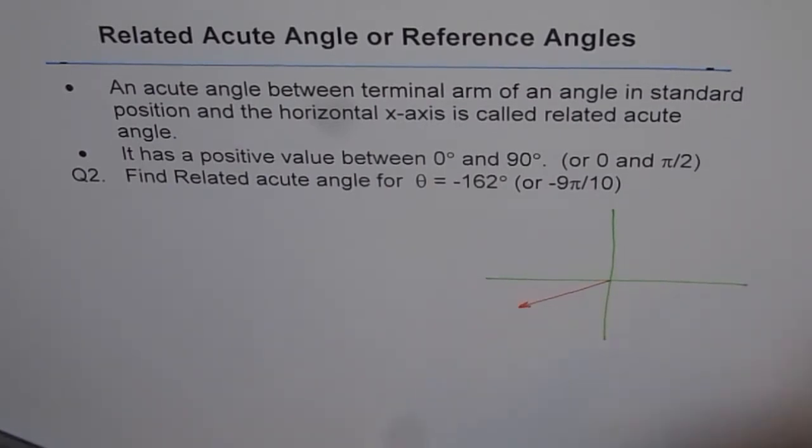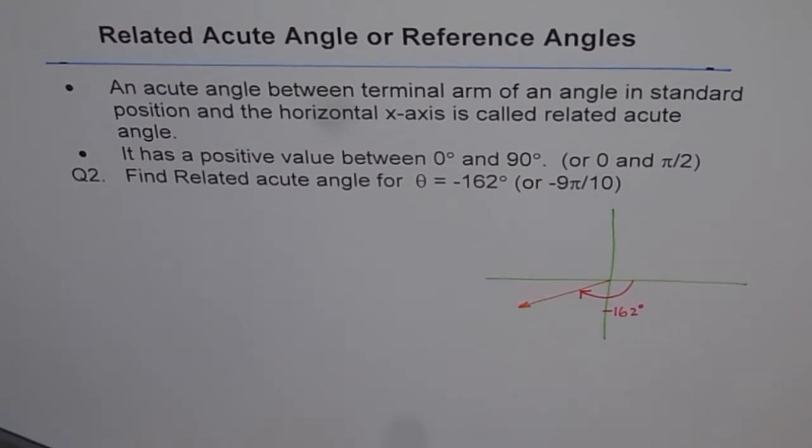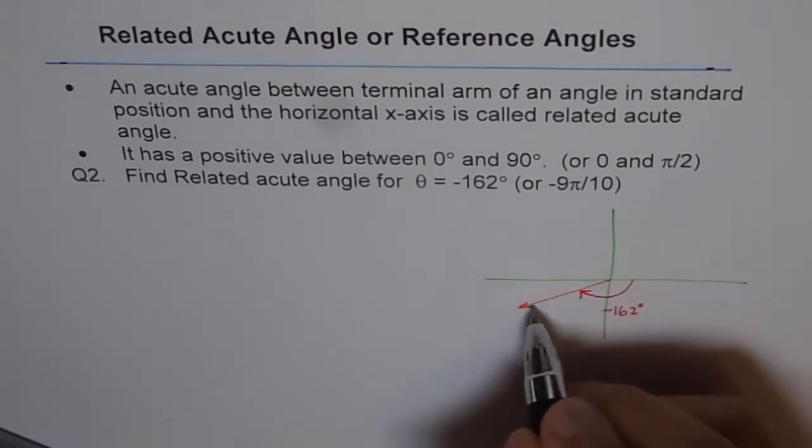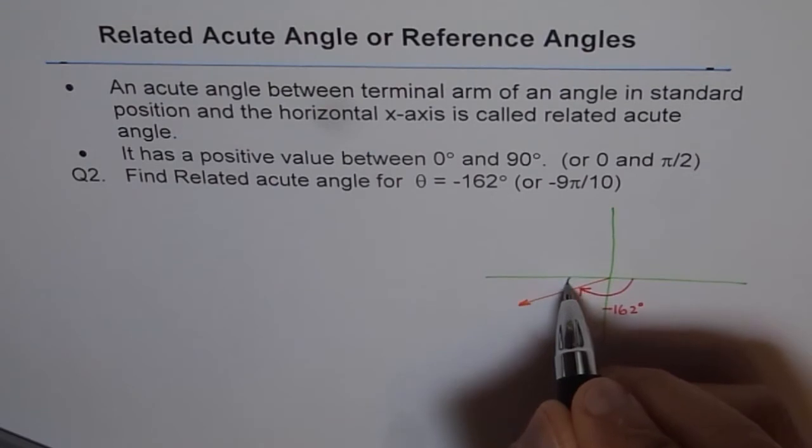And that is this angle from here to here, -162°. Now when we say related acute angle, we are trying to figure out how much is the angle. So this is the principal arm. How much is the angle between principal arm and the horizontal x-axis? That means this angle.